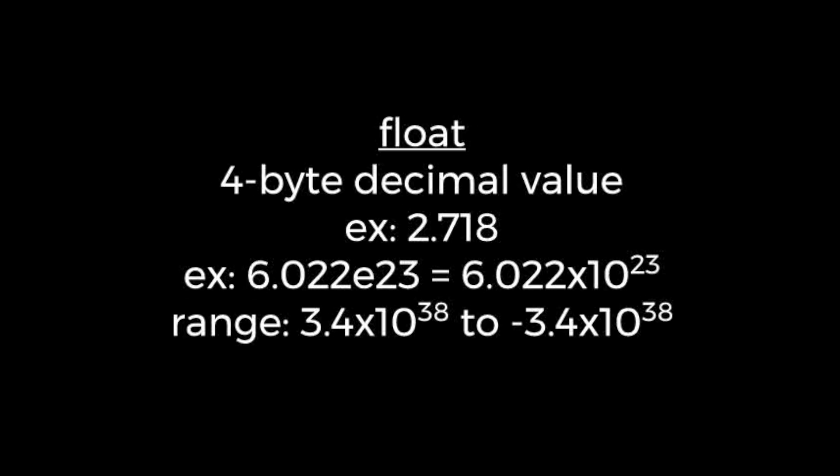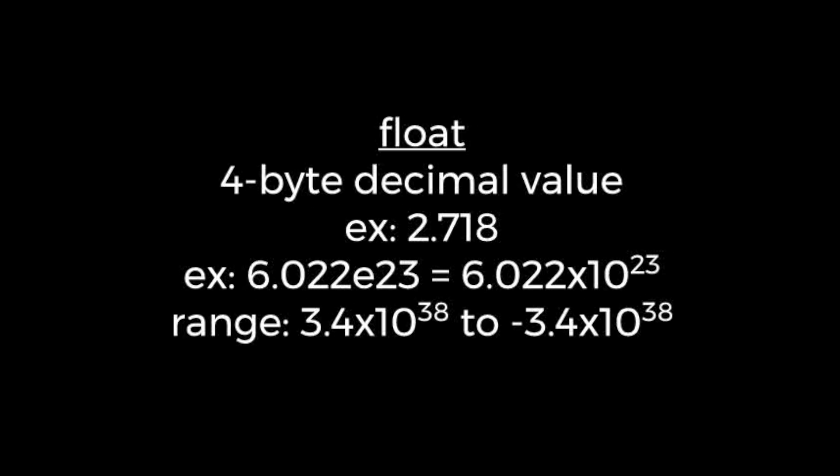Floating point numbers can be between about 3.4 times 10 to the 38 and negative 3.4 times 10 to the 38.